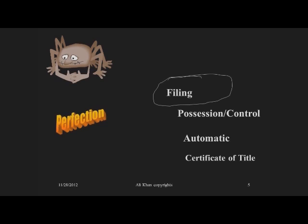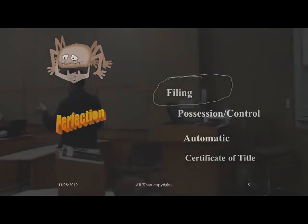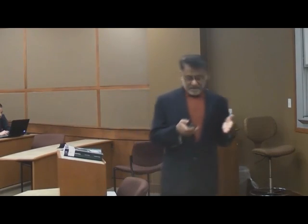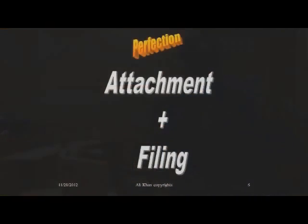The fourth method is certificate of title. Certain goods are subject to a title statute — at the state, federal, or international level. For such goods, the security interest is perfected by noting the security interest on the certificate of title. One thing to keep very clear: filing is a method of perfection, but filing is not equal to perfection. You can file at any stage of a secured transaction, with the permission of the debtor or pursuant to a security agreement.